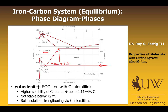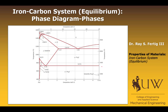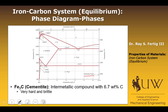We want to introduce one more phase: the cementite phase, or Fe3C. It's actually an intermetallic compound, and it has a defined weight percent carbon of 6.7%, so it sits just as a vertical line on the diagram. Mechanically, it's very hard and brittle. The three phases you need to remember are alpha or ferrite, gamma or austenite, and Fe3C, which is also called cementite.